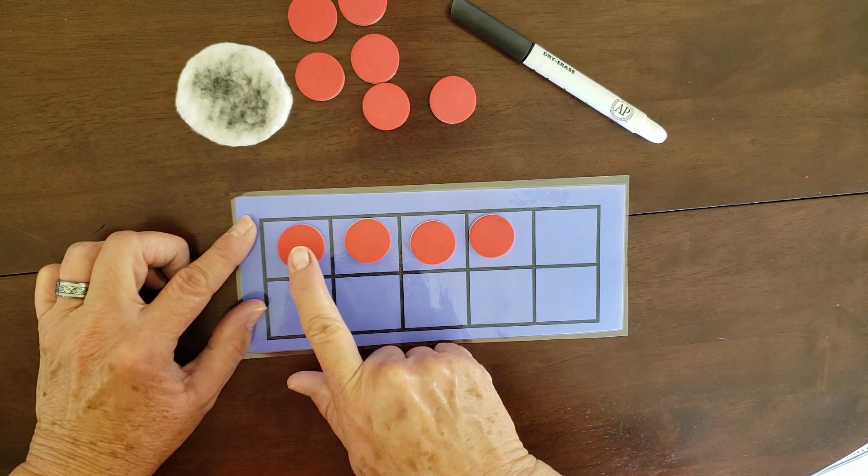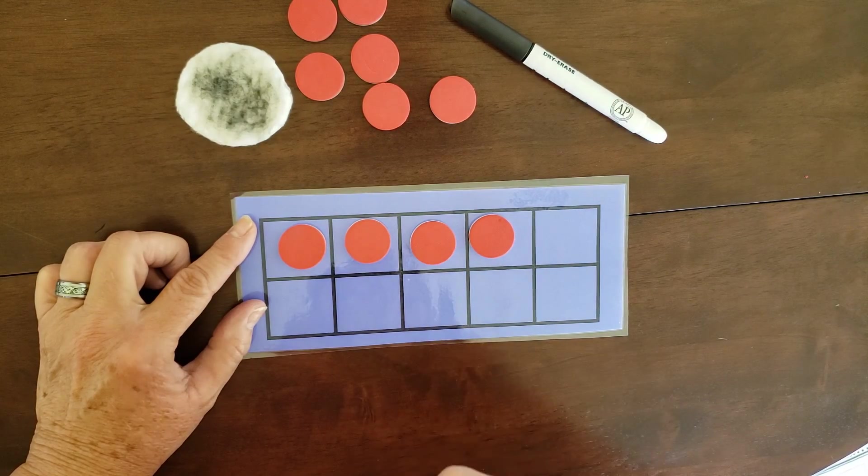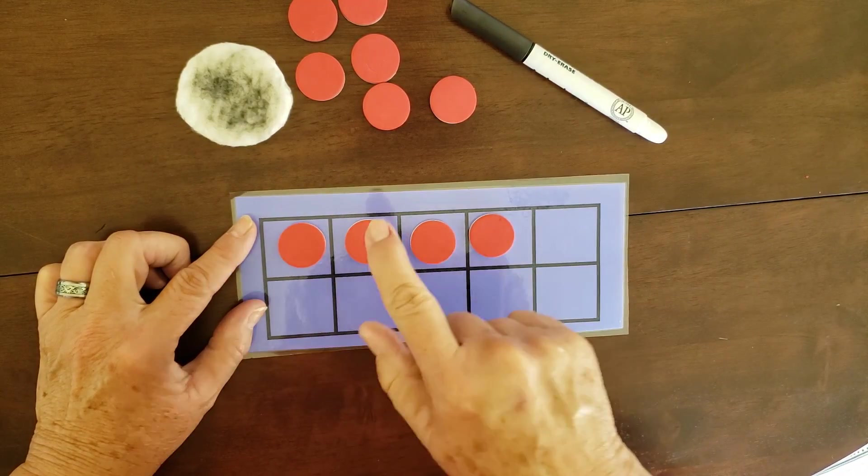So let's go back and count and see if we have 4. 1, 2, 3, 4. Remember, we touch each one as we count. We don't go 1, 2,